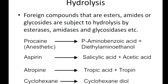The third type of phase 1 reaction is hydrolysis. Here the mechanism involves breaking bonds such as ester bonds, amide bonds, or glycosidic bonds using a water molecule. Examples include procaine, which is converted into para-aminobenzoic acid and diethylaminoethanol, and aspirin (acetylsalicylic acid), which is converted into salicylic acid plus acetic acid.